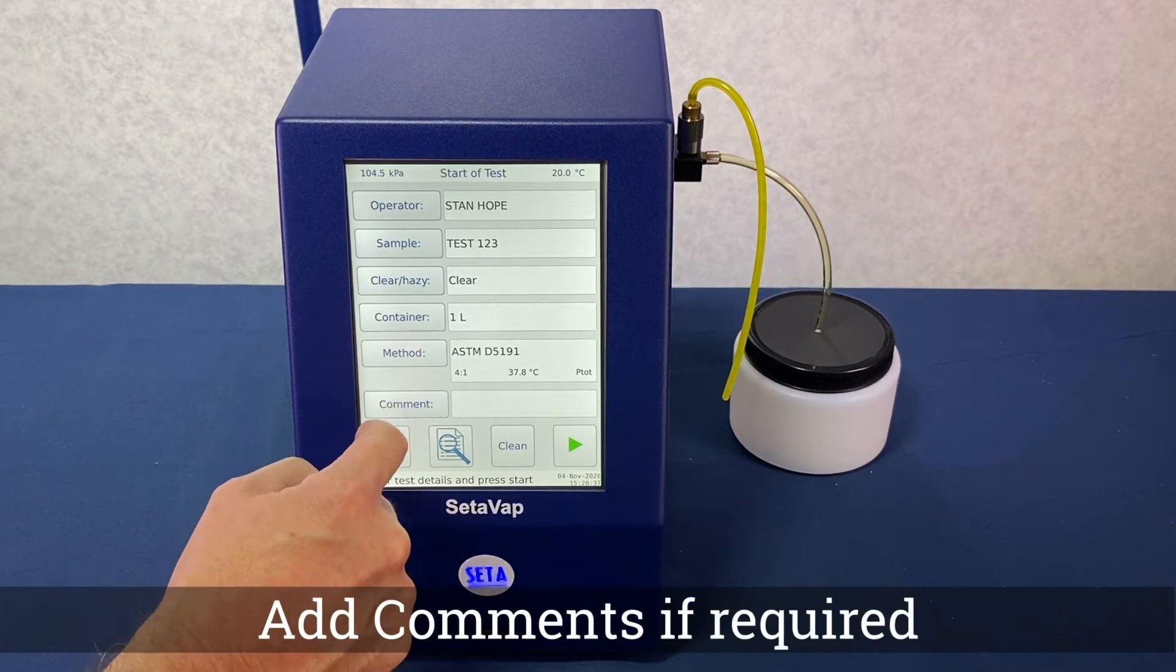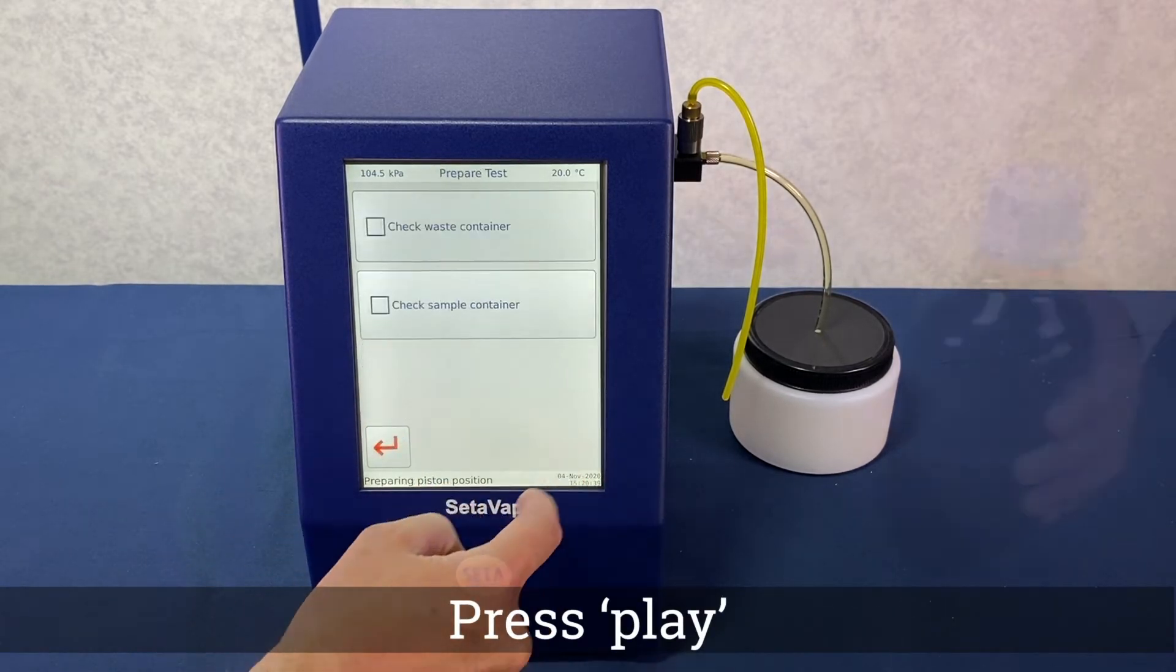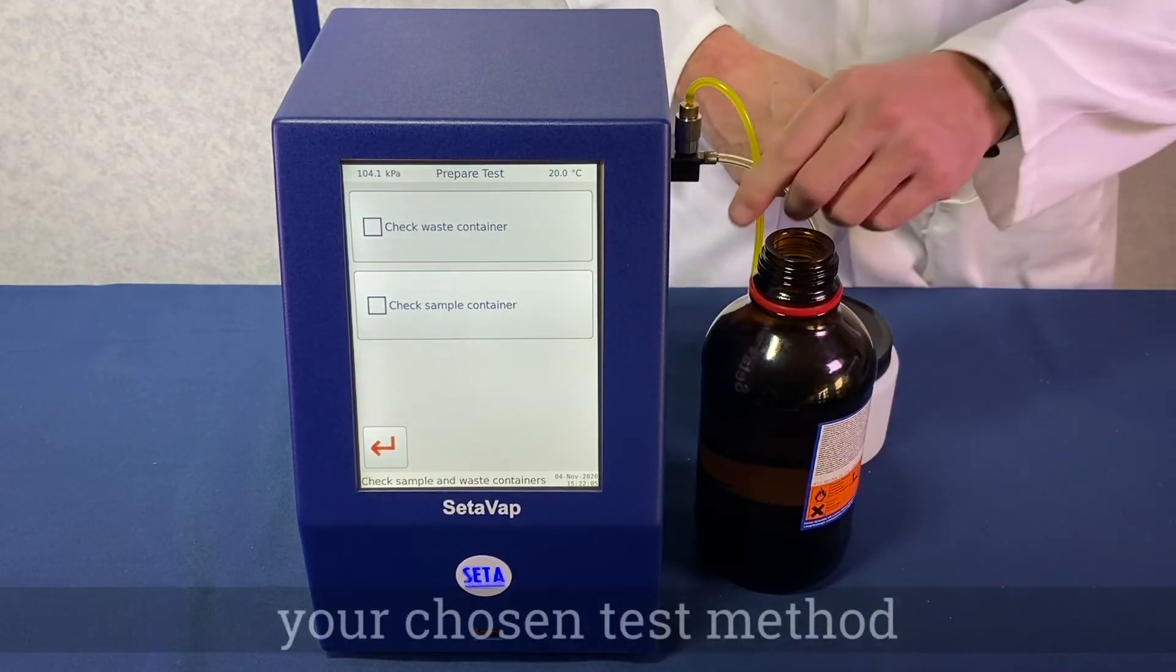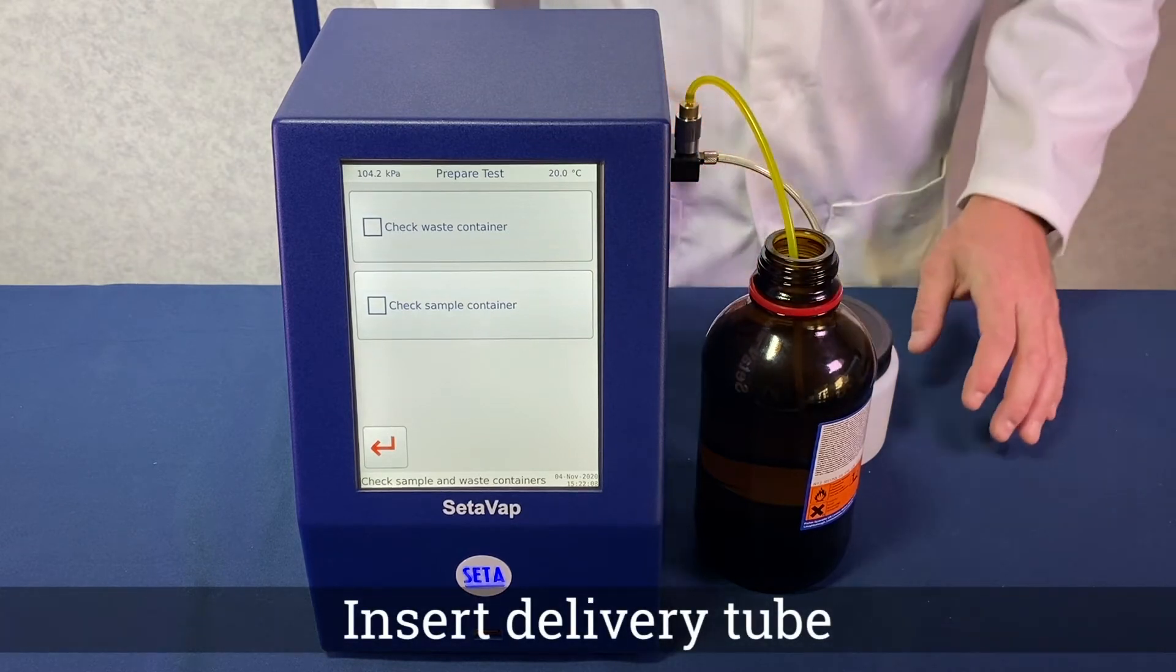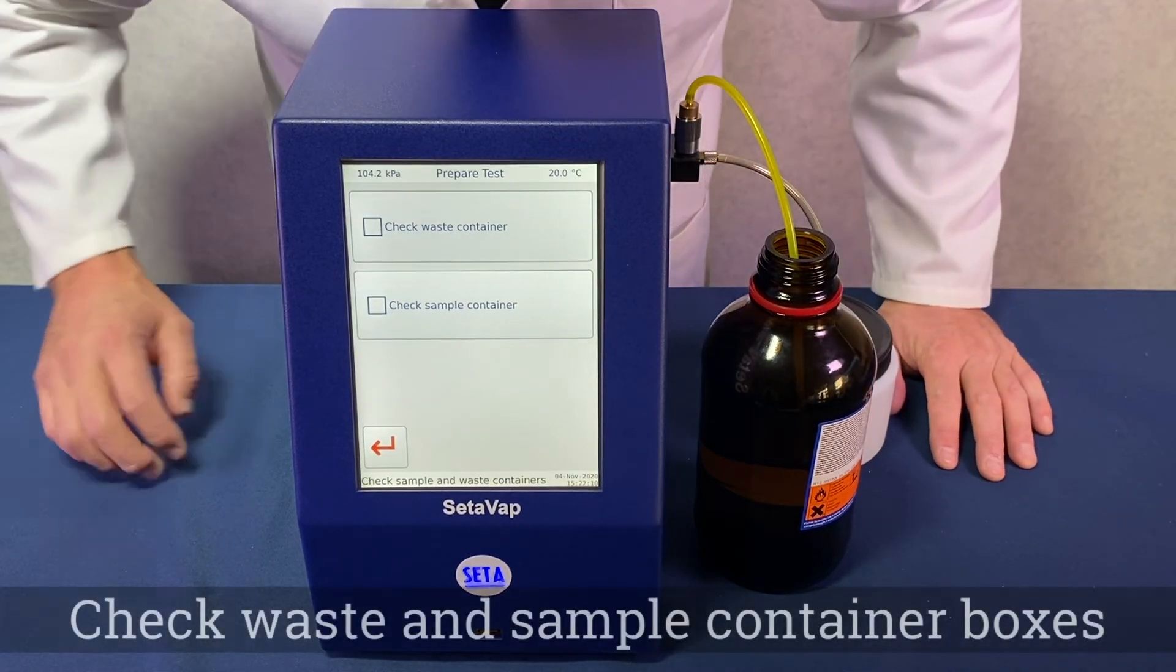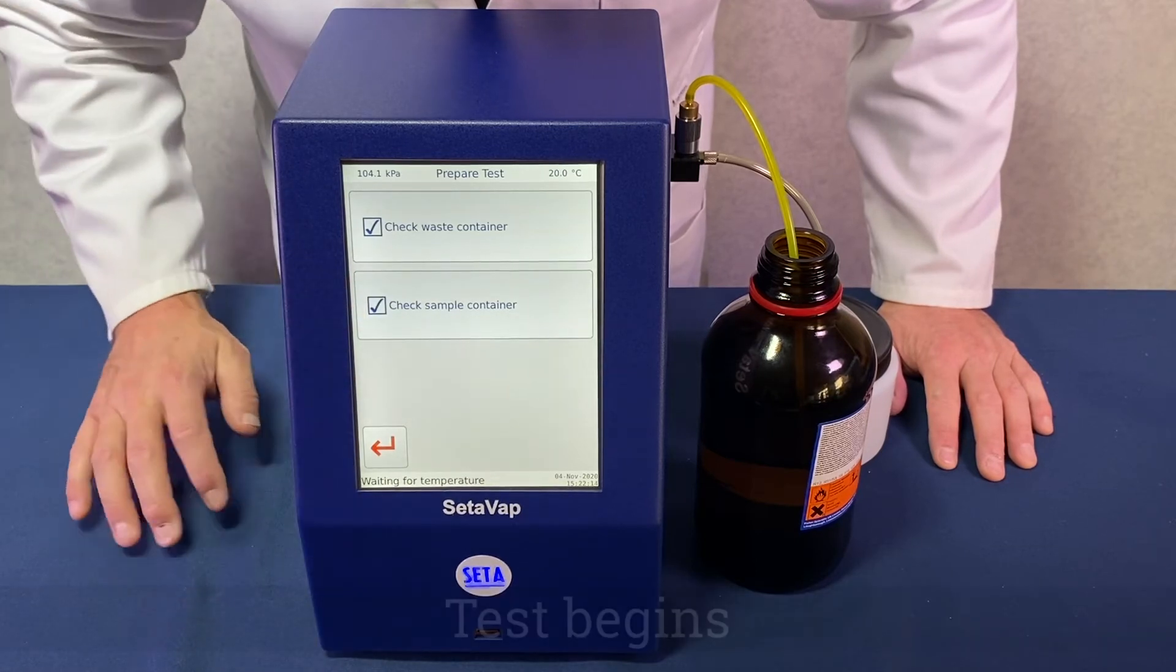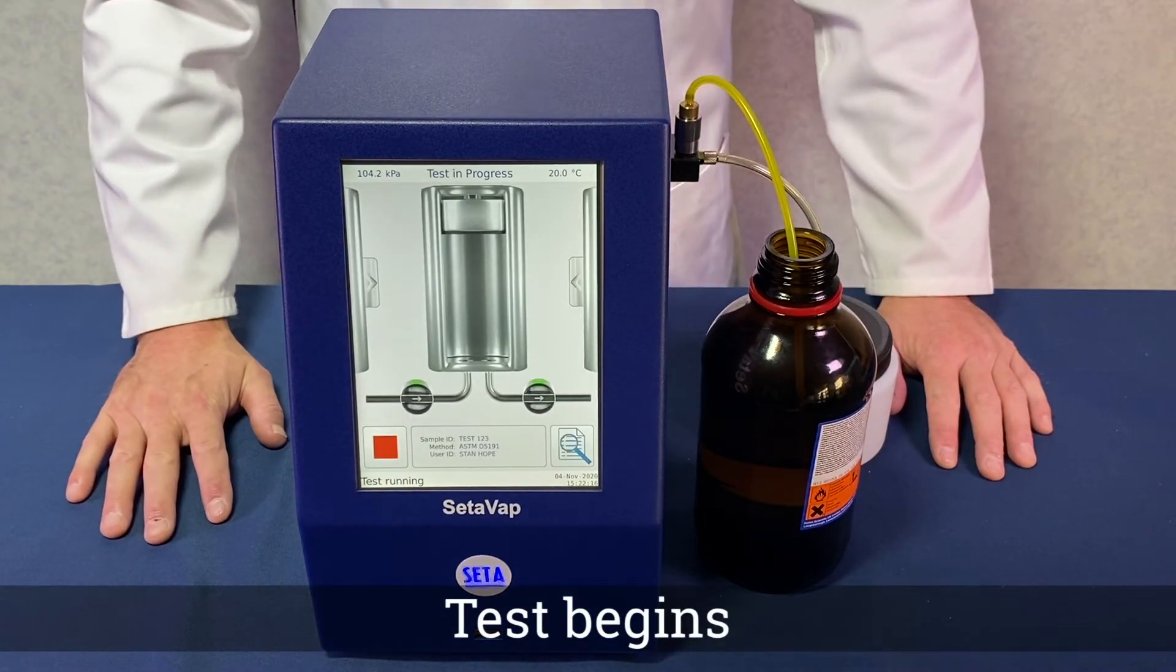Add any comments if required and then press the green play button. Having prepared your sample in accordance with the test method instructions, insert the delivery tube. Tick the waste and sample container check boxes, upon which the test will automatically start.